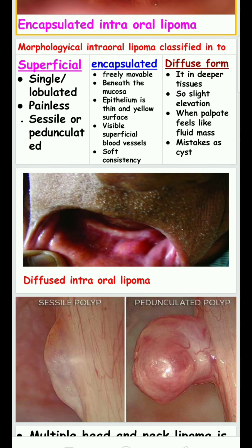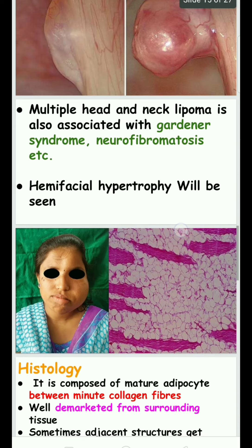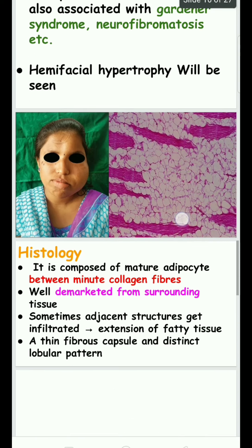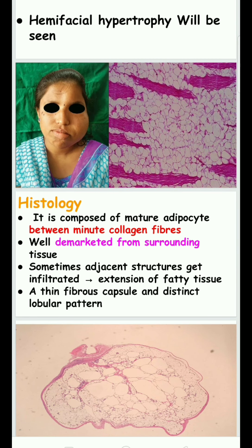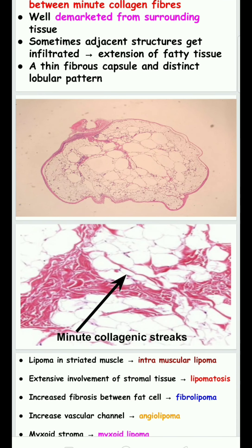The diffused form is mistaken as a cyst. Multiple head and neck lipomas are associated with Gardner syndrome and neurofibromatosis, and hemifacial hypertrophy may also be seen. Histologically, lipoma is composed of mature adipocytes with collagen fibers seen between the adipocyte tissue.